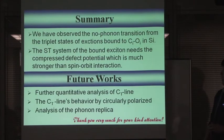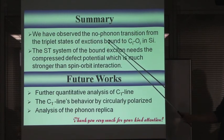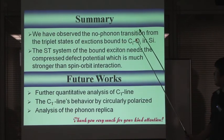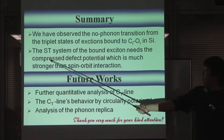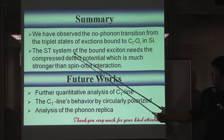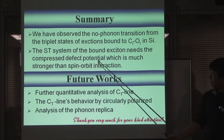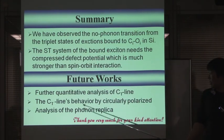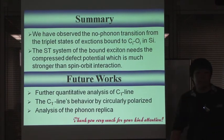In summary, first, we have observed the no-phonon transition from the triplet states of the exciton bound to carbon-oxygen defects in silicon. Second, the singlet-triplet system of the bound exciton requires a compressive defect potential much stronger than the spin-orbit interaction. Future work will include a more complete theoretical model. Thank you very much for your kind attention.